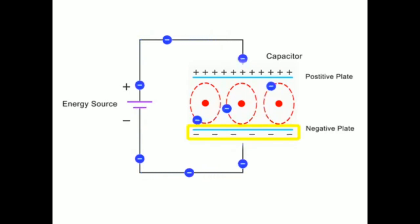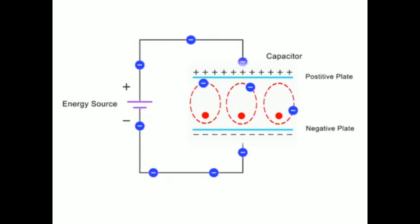The attraction of the nucleus to the negatively charged plate further stretches the atoms. This process of distorting the orbit of the electrons uses energy that then becomes stored in the dielectric material.